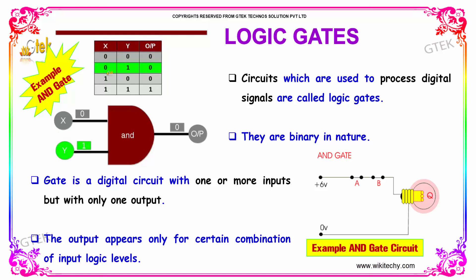A gate is a digital circuit with one or more inputs but only one output. The output appears only for certain combinations of input logic levels.